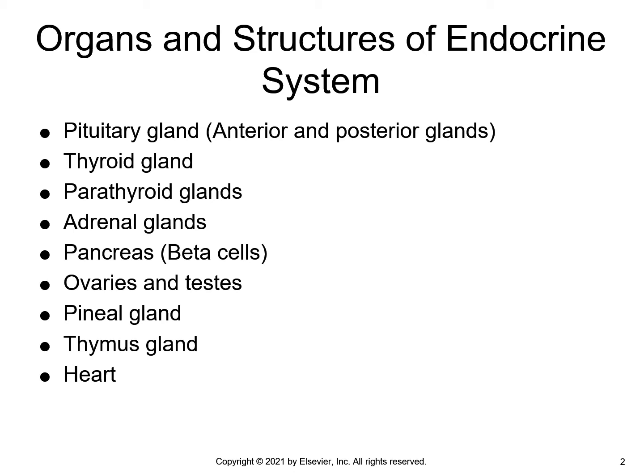The thyroid gland lies below the larynx, over the thyroid cartilage, in front and on either side of the trachea. The parathyroid glands are four to six small glands located on the posterior of the thyroid gland. The adrenal glands are located on the upper surface of each kidney and are composed of the cortex and the medulla.